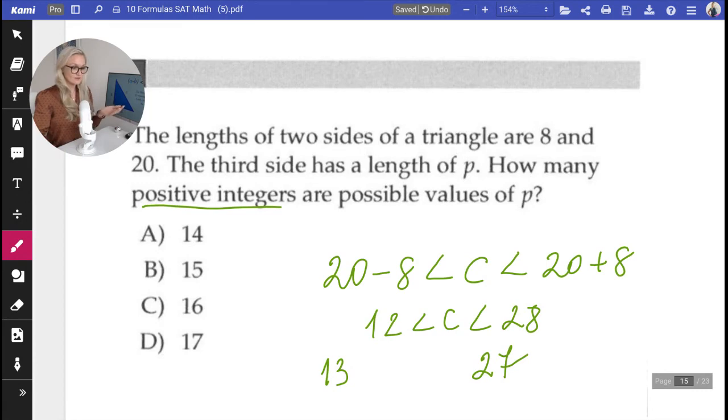And if we count carefully, 13, 14, 15, 16, 17, 18, 19, 20, 21, 22, 23, 24, 25, 26, 27, you get 15.